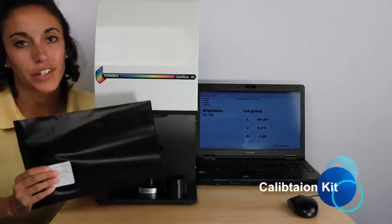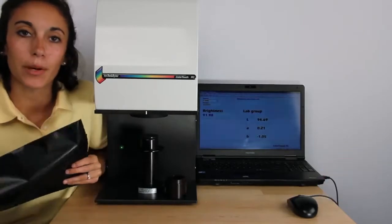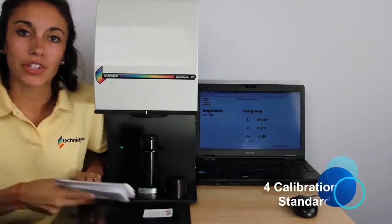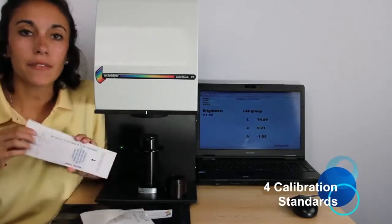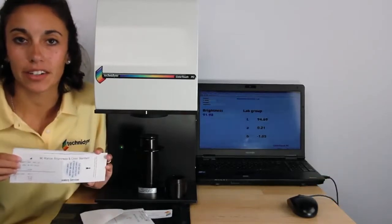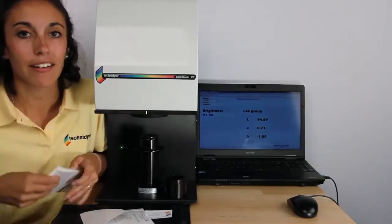The first thing that you should have is your calibration kit. Inside your calibration kit, you'll find four calibration standards. The 90 and the fluorescent standard are your primary standards, and 60 and 70 are used to verify measurement linearity.